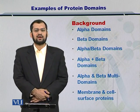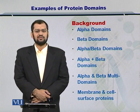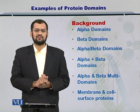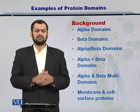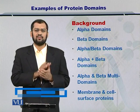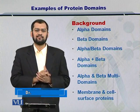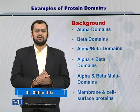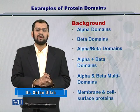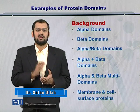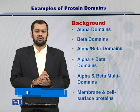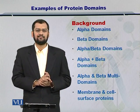Foremost are the alpha domains that are mostly constituted by alpha helices. And then there are the beta domains which are constituted by beta sheets. And then alpha plus beta, or alpha over beta, or alpha and beta.